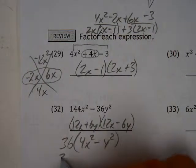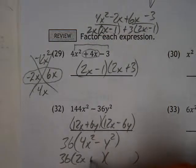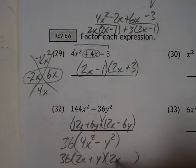So if you factor the 36 out first, it will end up factoring to look like this: 2x plus y and 2x minus y.